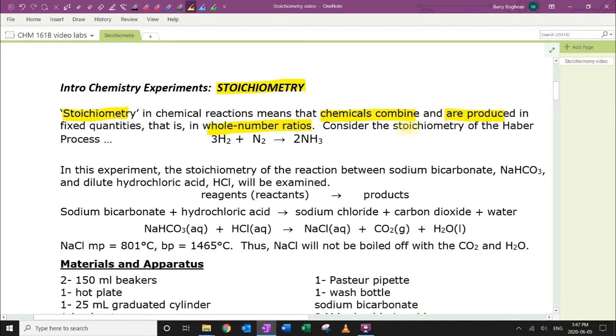Let's briefly consider the stoichiometry of the Haber process, the industrial preparation of ammonia. The balanced chemical equation shows that 3 moles of hydrogen react with 1 mole of nitrogen. The coefficient of 1 is not written in balanced chemical equations, producing 2 moles of ammonia.